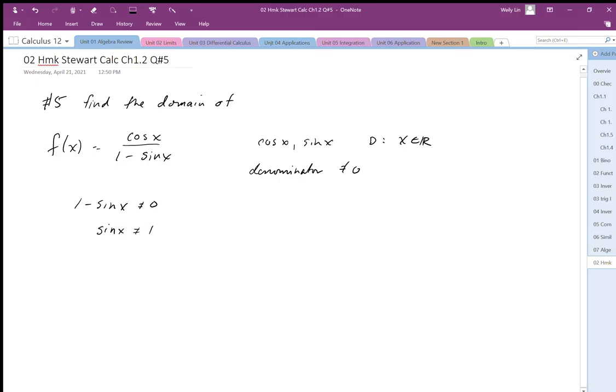The angles that give us sin x equal to 1, when we think of our circle, sin is equal to 1 up here. So the angles that give us that are going to be π/2, and it's going to hit that 1 every n2π. So I'm going to write n2π as a repeating solution. So x cannot equal π/2 plus n2π.